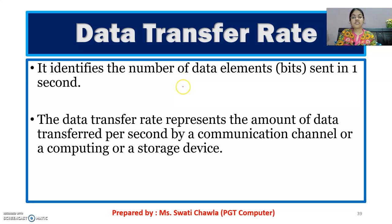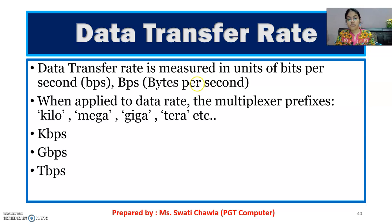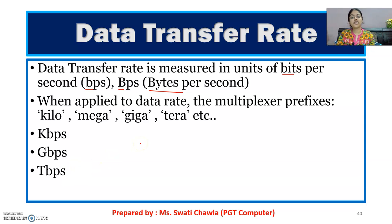Next term is the data transfer rate. Data transfer rate means how much data we can transfer in one second. It identifies the number of data elements or bits sent in one second. The data transfer rate represents the amount of data transferred per second by a communication channel or a computing or storage device. It can be measured in these units: bits per second, bytes per second — capital B represents bytes and small b represents bits — or other units like kbps (kilobits per second), gbps, and tbps. These are your units to measure the data transfer rate.